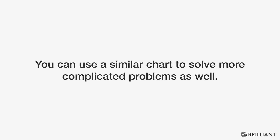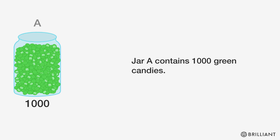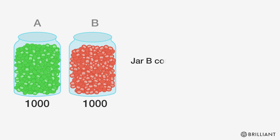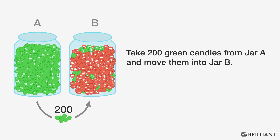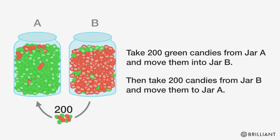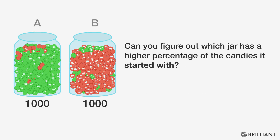You can use a similar chart to solve more complicated problems as well. Jar A contains 1,000 green candies. Jar B contains 1,000 red candies. Take 200 green candies from jar A and move them into jar B. Then take 200 candies from jar B and move them to jar A. Can you figure out which jar has a higher percentage of the candies it started with?